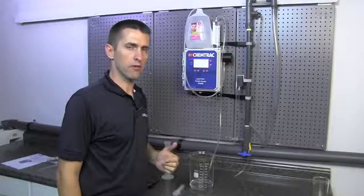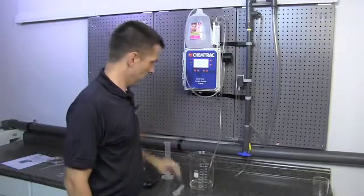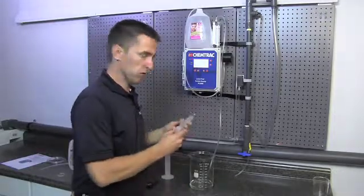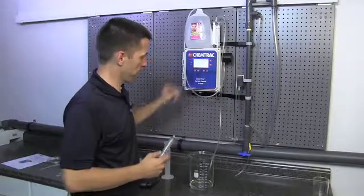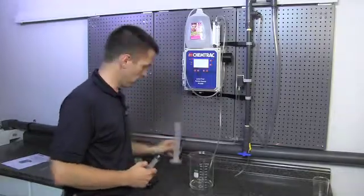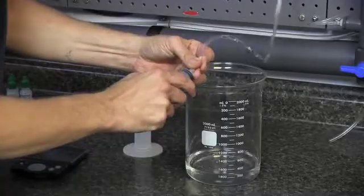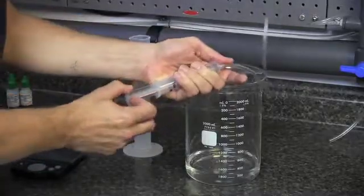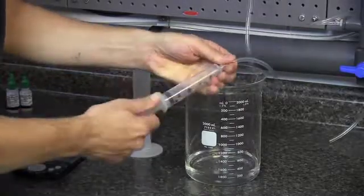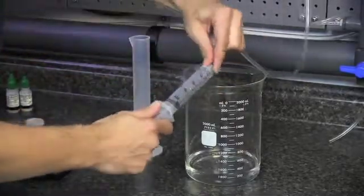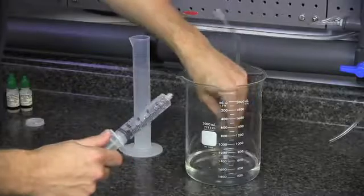Once we have this all set up, the next thing we need to do is calibrate the flow meter. We're going to need a syringe to start the flow through the sensor and through the flow meter. We'll also need our graduate cylinder and a stopwatch. We're just going to attach the syringe and just use this to draw water through the sensor and place the tubing back into the jug.